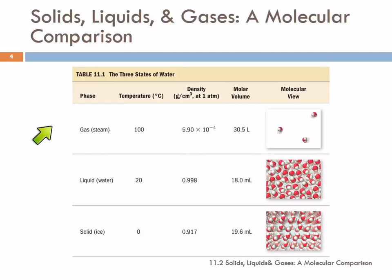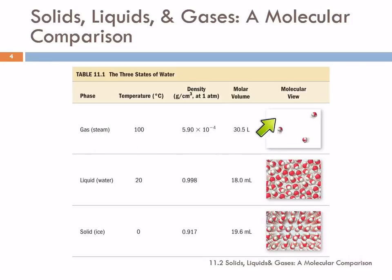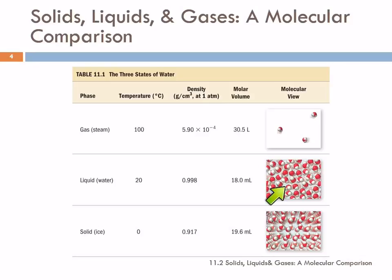Let's revisit states of matter. Water is nice to talk about because we're familiar with its three forms. In the gas state we call it steam, and the molecules are far apart with a lot of empty space. In liquid water, the molecules are touchingly close — those intermolecular forces only work at short distances, so here where the molecules are close together, the forces can have an effect. In solid water, the molecules are also touchingly close, but now they're not able to move relative to each other. The difference between these states is due to temperature.